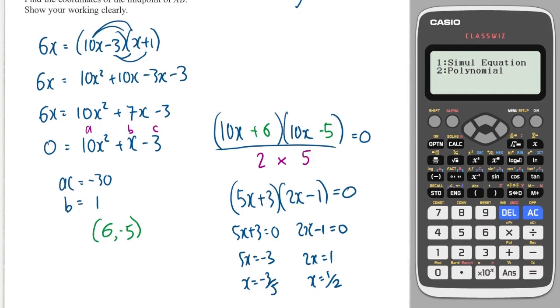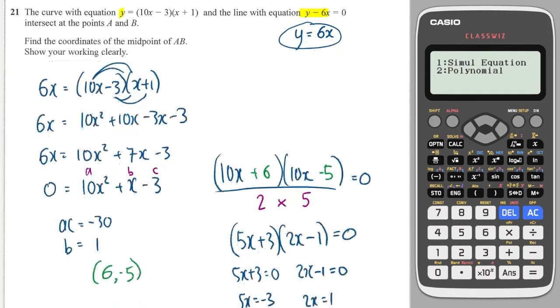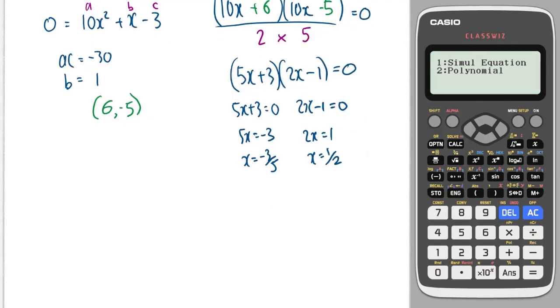Now we need to find the corresponding y values. And the y values are just 6 times the x. That's nice and easy. So this y value times that by 6 will give you minus 18 over 5. And this y value times that by 6 will give you 3.